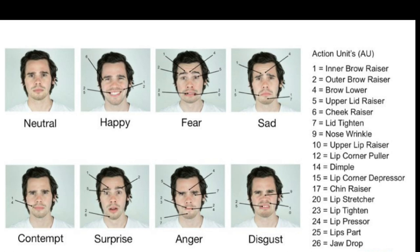We look at everything from your cheeks, to your upper nose, to your dimples, to your chin, to your lips, to your jaw. By studying all of these action units, and based on the combinations of what these action units are doing in a particular expression, we can actually identify seven universal emotions, each with a distinct set of facial expressions — or even eight, which includes neutral, happy, fear, sad, contempt, surprise, anger, and disgust.